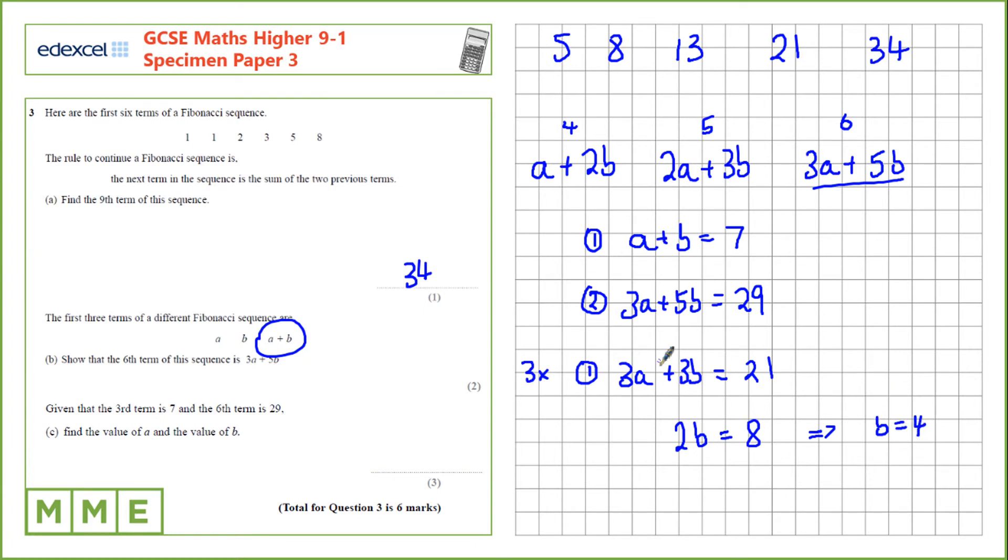Now we can substitute b equals 4 into this equation. So a plus 4 equals 7, which means a has to be 3. So our two answers are a is 3, and b is 4.